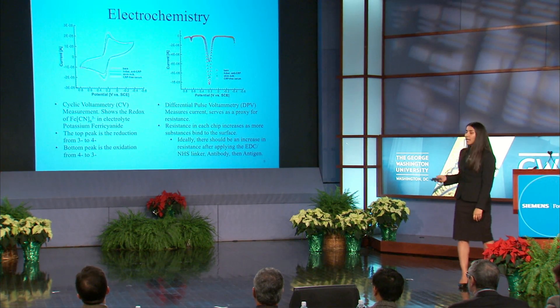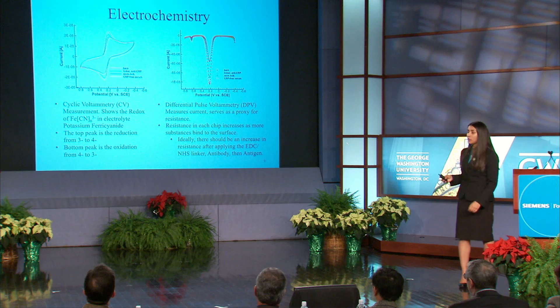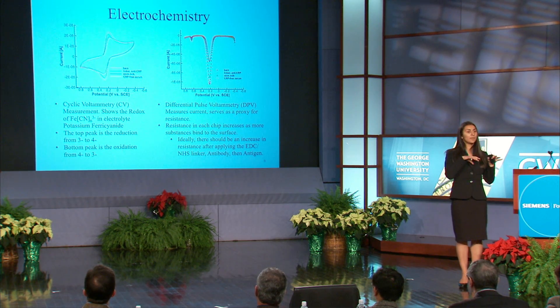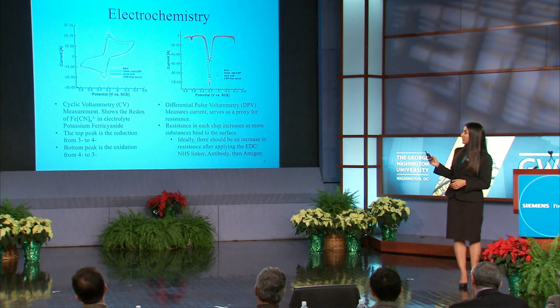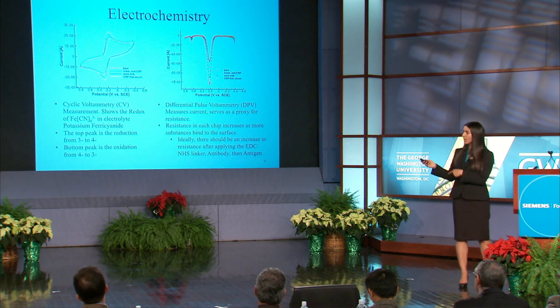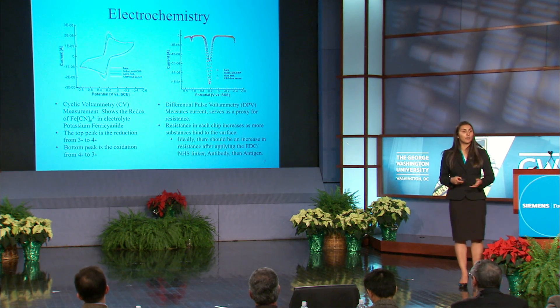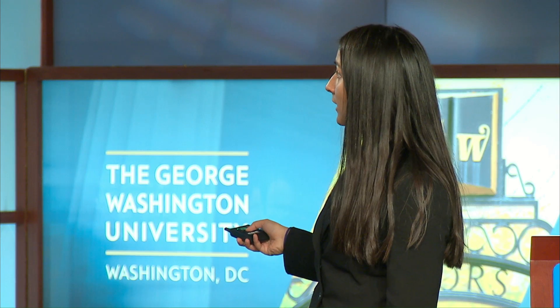The picture on the left is the CV curve, which is a redox reaction curve. On the carbon nanofiber electrodes, it forms an electron diffusion cloud. I used an electrolyte solution, potassium ferricyanide, which transfers an electron back and forth to create this redox reaction curve. The second curve is the DPV curve, which measures current as a proxy for resistance. Ideally, with each step of the surface characterization process, I should see an increase in resistance in the carbon nanofiber device.